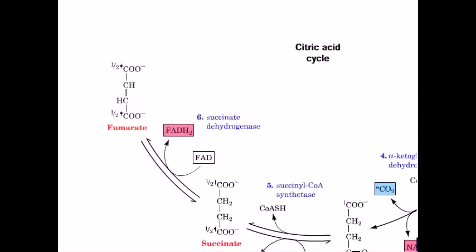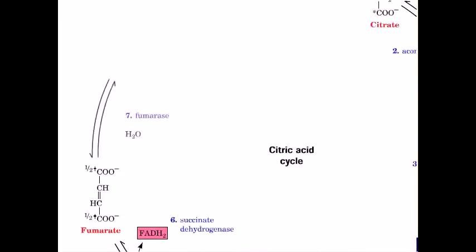Succinate is converted to fumarate by succinate dehydrogenase (reaction 6). In the same reaction, covalently bound coenzyme FAD is reduced to FADH2, which is reoxidized to FAD by the electron transport chain.